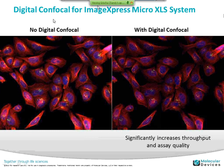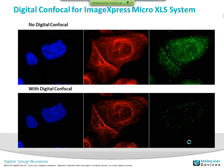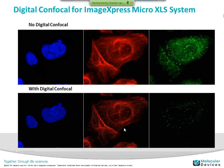The XLS system is compatible with our digital confocal system, which helps drive speed. You can see on one side an image with no digital confocal applied, and on the right these tubules are much more refined — increasing throughput and assay quality. Here on the left is the no digital confocal image showing the nuclear stain, tubulin stain, and a puncta stain. On the bottom, after digital confocal is applied, you get a higher contrast image in all three channels and you're able to see microtubules clearly.